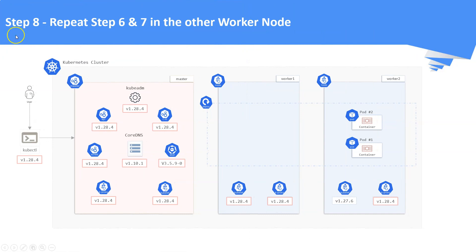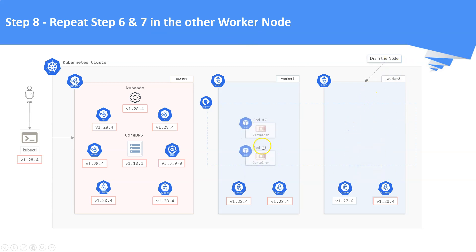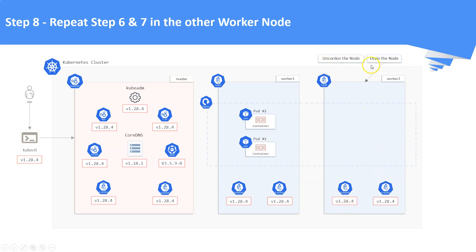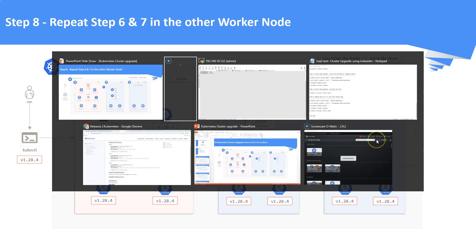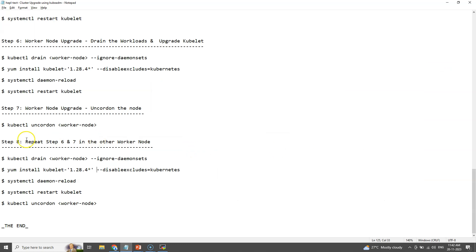Step number eight: repeat steps six and seven for worker node number two. That is, drain worker node number two, upgrade the kubelet, and finally uncordon the node to make it schedulable again. Let us do these steps in worker node number two.